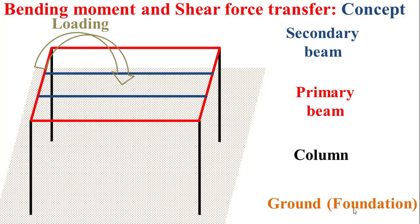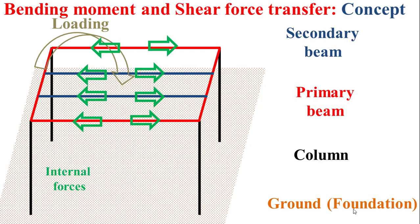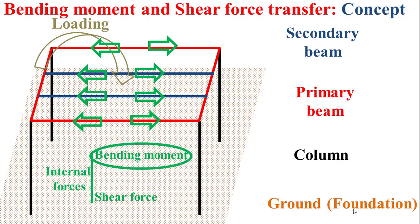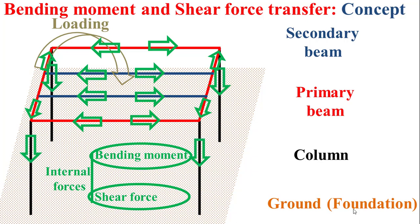If we consider a loading applied on this steel frame, we notice that internal forces will be created in the cross-sections of the different steel members that constitute the steel frame in order to maintain equilibrium. These internal forces are bending moment and shear force. These internal forces will be transferred from the secondary beams to the primary beams, from the primary beams to the columns, and from the columns to the foundations.